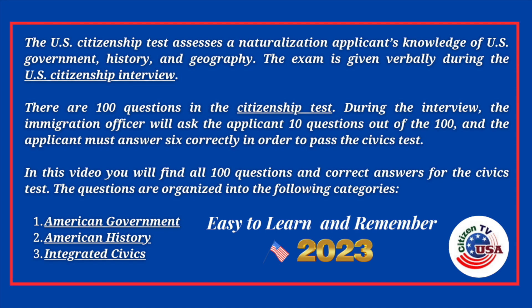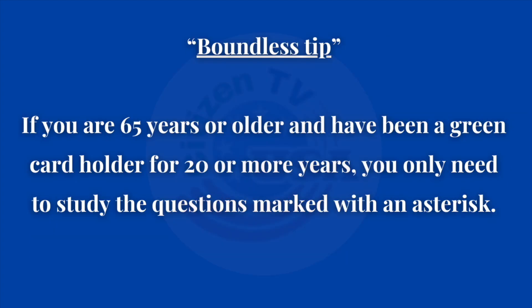In this video, you will find all 100 questions and correct answers for the civics test. The questions are organized into the following categories: American Government, American History, and Integrated Civics — easy to learn and remember. Boundless Tip: If you are 65 years or older and have been a green card holder for 20 or more years, you only need to study the questions marked with an asterisk.